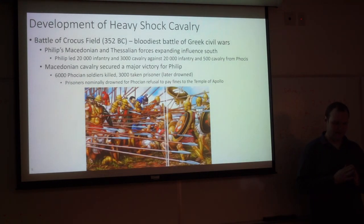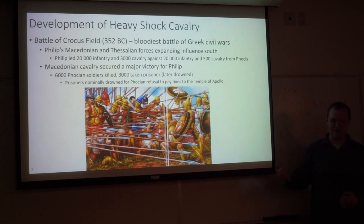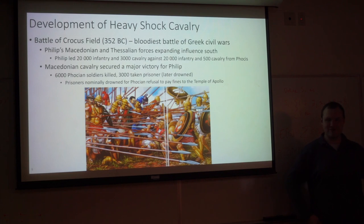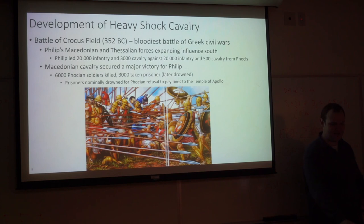We get to the Battle of Crocus Field. This was the bloodiest battle of the Greek civil wars and was now Philip's new reformed army — with his new cavalry and new infantry — fighting to expand their influence to the south. In this battle, he led 20,000 infantry and around 3,000 cavalry against 20,000 infantry and just 500 cavalry from Phocis. The Macedonian cavalry pretty much routed the entire Phocian army — 6,000 Phocian soldiers were killed and 3,000 taken prisoner, and then drowned for the crime of refusing to pay a fine to the Temple of Apollo. So we see Philip taking the lessons he learned from Epaminondas and using his cavalry extremely decisively in the field.